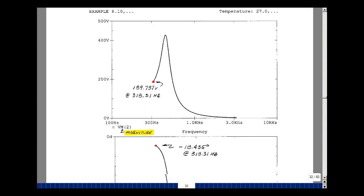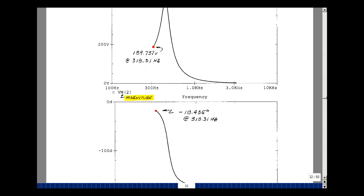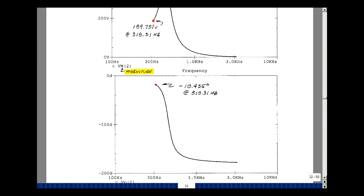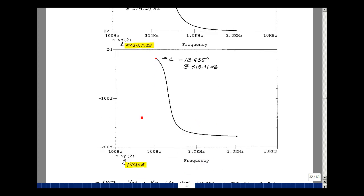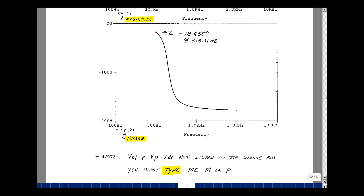To get the phase angle, we just type vp of 2. You can have uppercase or lowercase letters. It doesn't make any difference. And the first data point here was at an angle of minus 18.435. That's exactly what we hand calculated. Now when you're running PSPICE, the m and the p are not listed in the dialog box. You actually have to type those. I'm not sure why they left that off, but you have to do that to get the graphs that are here.